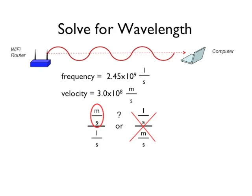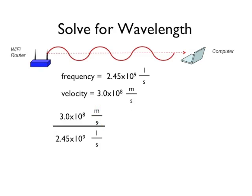In this example, c over nu is 3 times 10 to the eighth meters per second, divided by 2.45 times 10 to the ninth per second, and that equals 0.122 meters, or about 12 centimeters, the size of a compact disc.